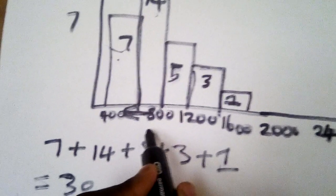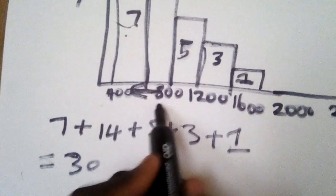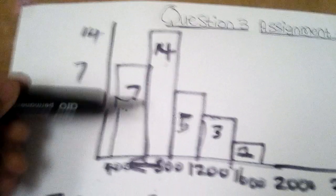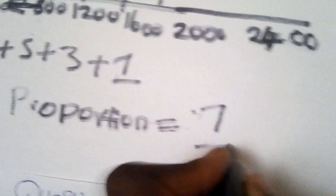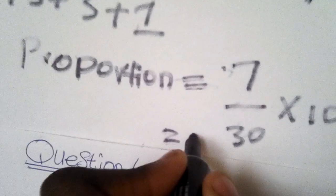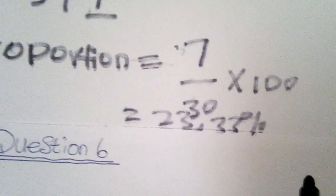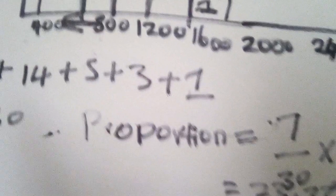Now we have the total which is 30. For shoppers who spent $800 or less, that falls under the survey, so the proportion is equal to 7 over 30, multiplied by 100, which gives you 23.33 percent.